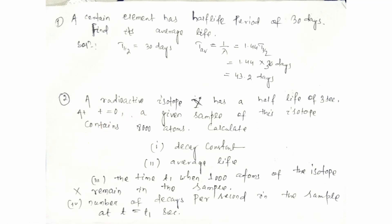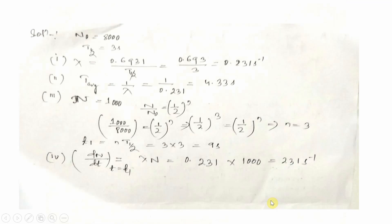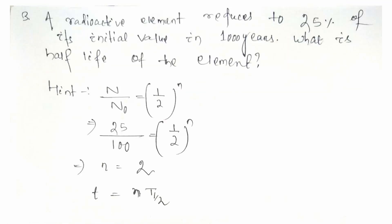The next problem: A radioactive isotope X has a half-life of 3 seconds. At T = 0, a given sample contains 8,000 atoms. Calculate the decay constant, average life, the time T₁ when 1,000 atoms remain, and the number of decays per second in the sample. Try to solve this yourself as it was already solved earlier.